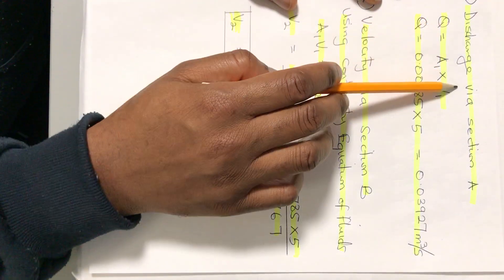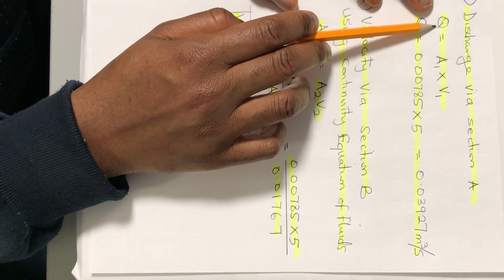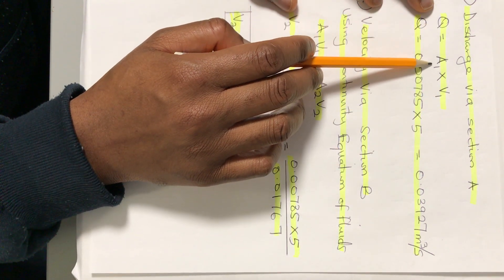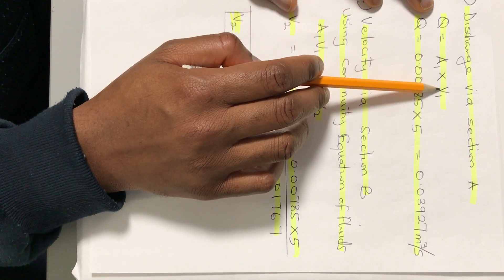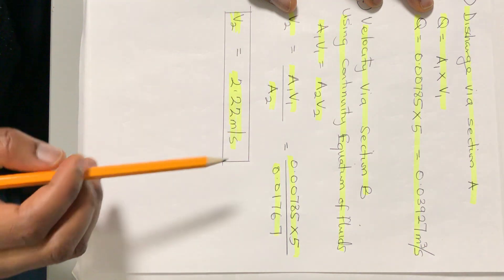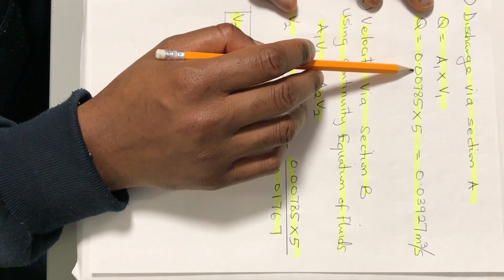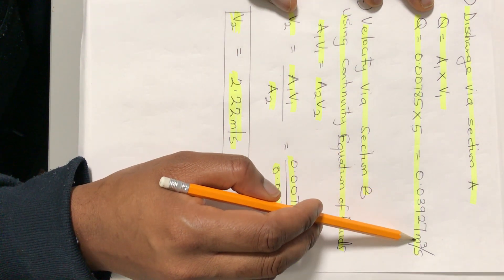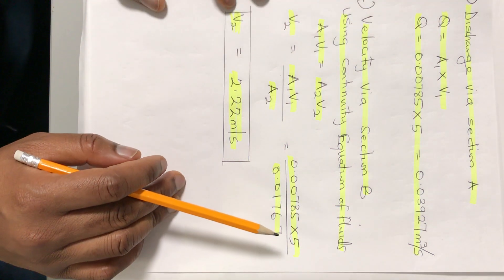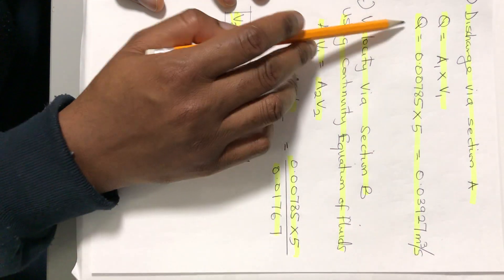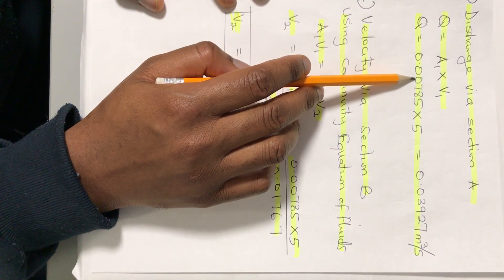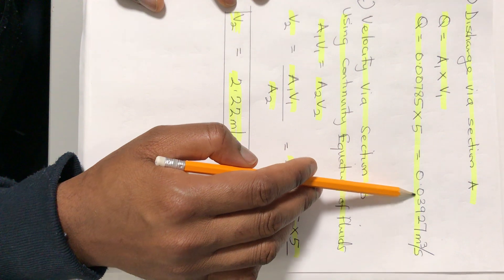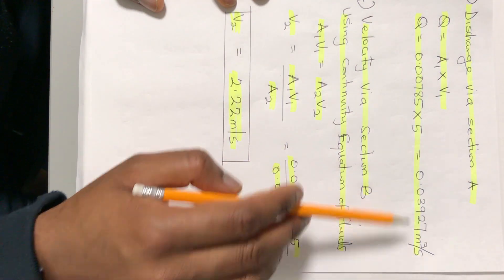The discharge at section A equals the area at section A multiplied by the velocity, which is 5 meters per second. So Q equals 0.007854 times 5, which gives us 0.03927 meters cubed per second. This is our volumetric flow rate, which is the discharge.